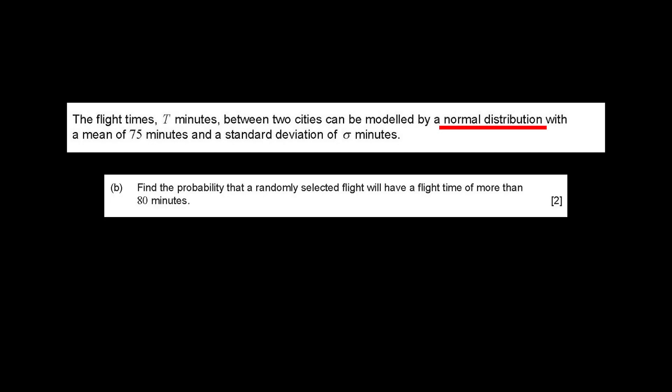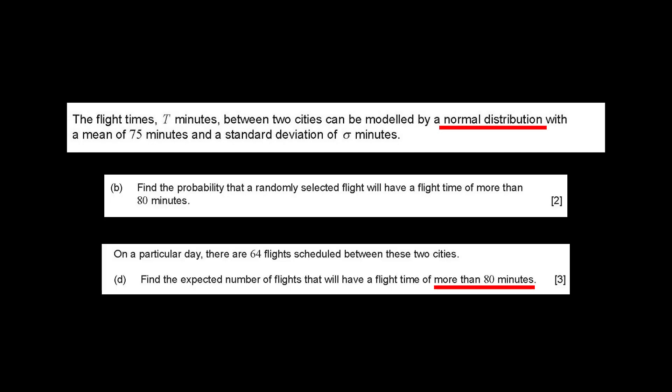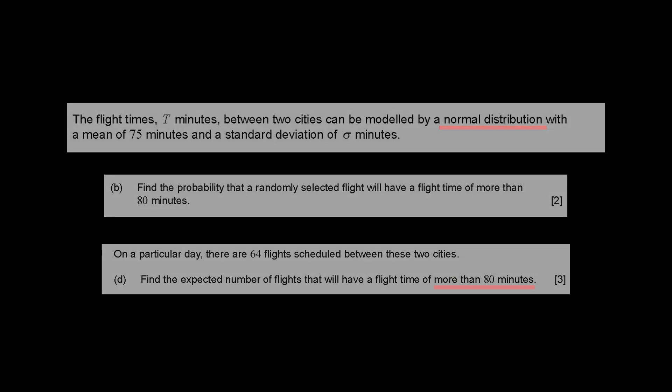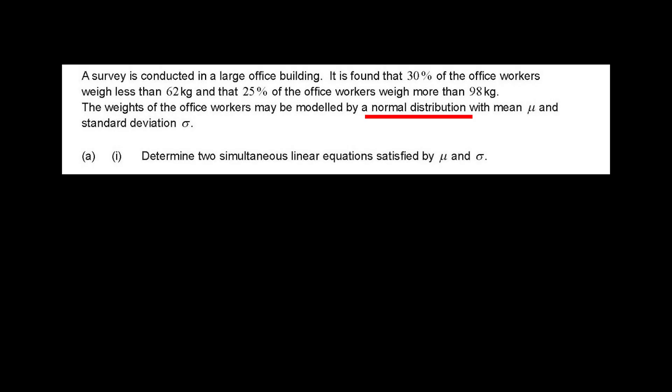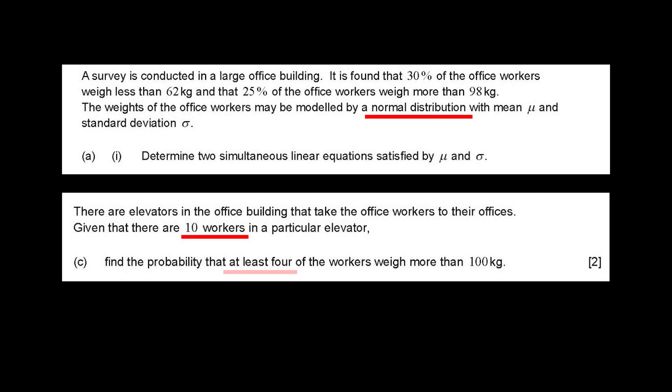Normal distribution and binomial distribution problems are often mixed in IB math exams. Be prepared to use normal distribution to calculate a certain probability and then use that probability to solve a binomial distribution problem. Make sure to be familiar with both types of distributions. Don't be surprised if a problem asks you to find the probability of at least 4 successes out of 10 trials after finding a probability with a normal distribution. Just use the binomial distribution.